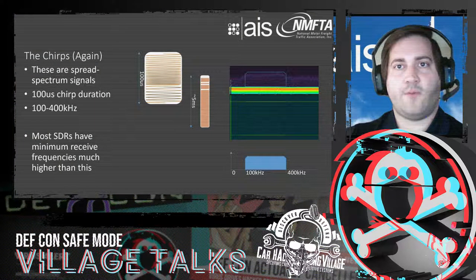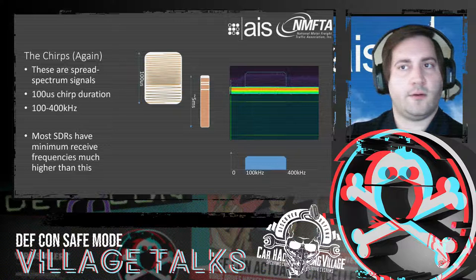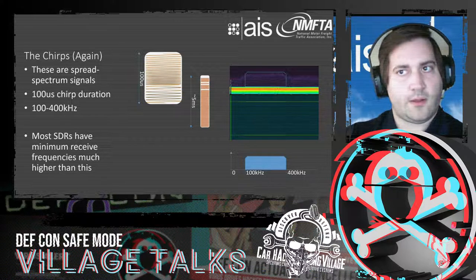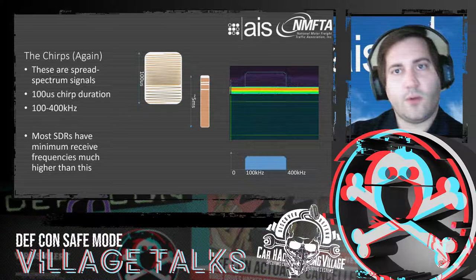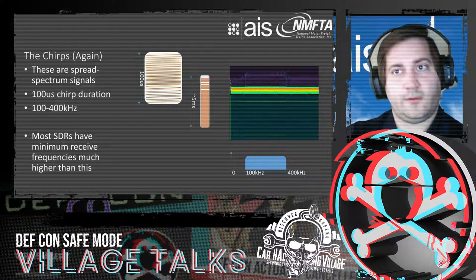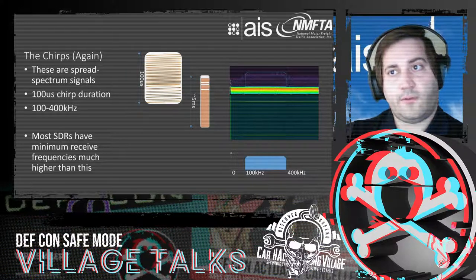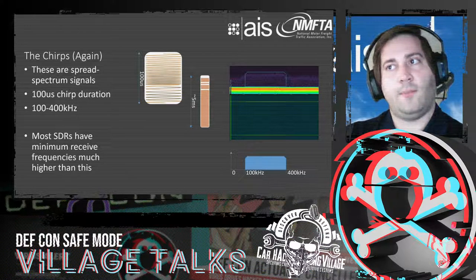The J2497 signals consist primarily of a series of 100-microsecond chirps that start at 203 kHz, ramp up to 400 kHz, quickly drop to 100 kHz, and back to 203 kHz. The 100 to 400 kHz frequency range is lower than most SDRs can handle — for example, the RTL2832U dongles' starting frequency varies by model, ranging from 500 kHz to around 50 MHz.